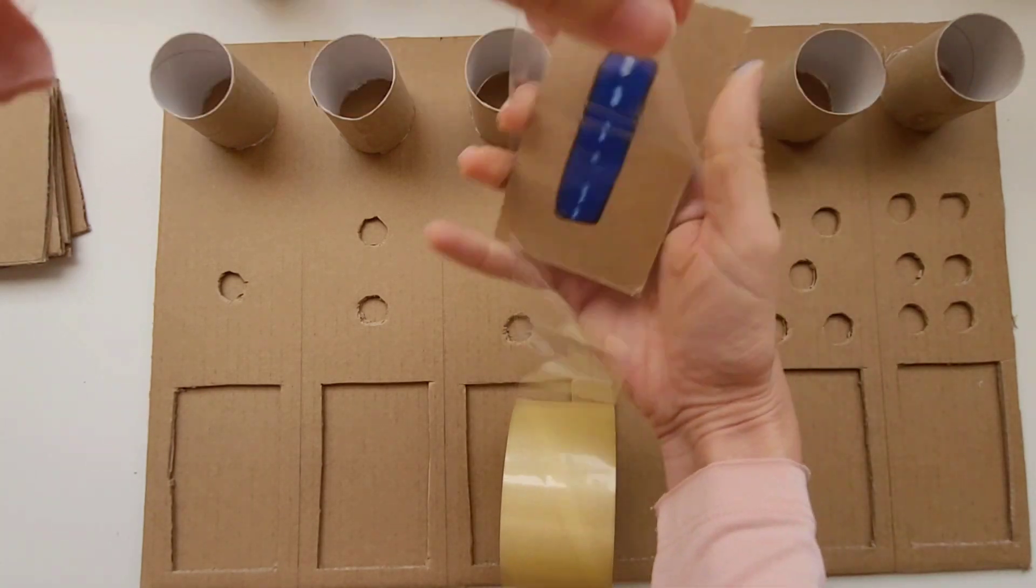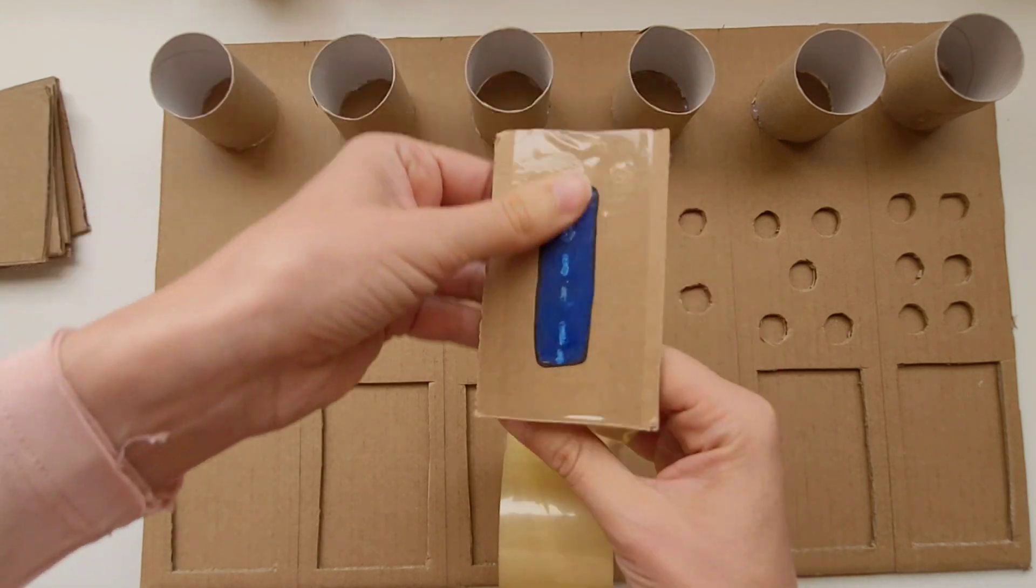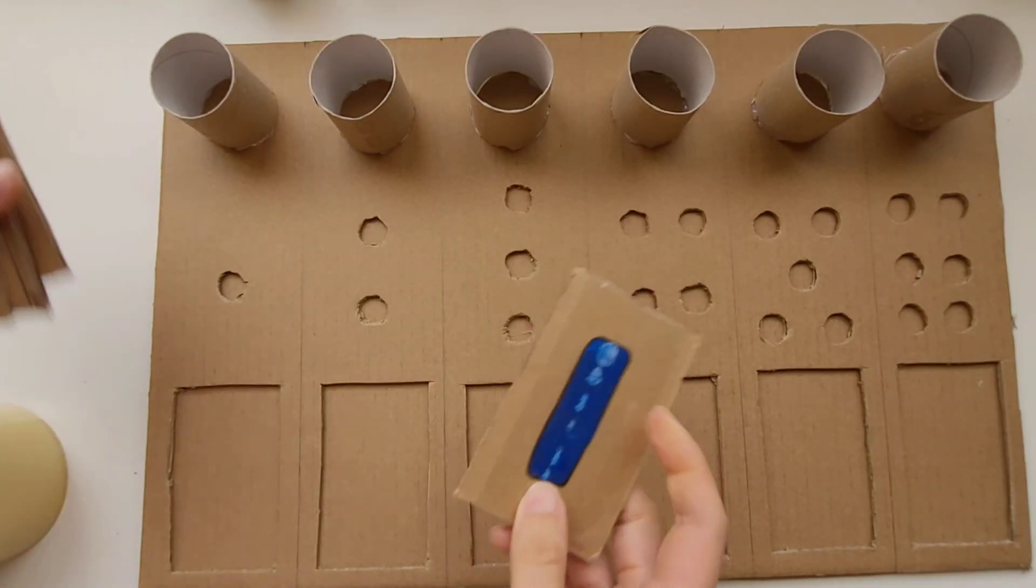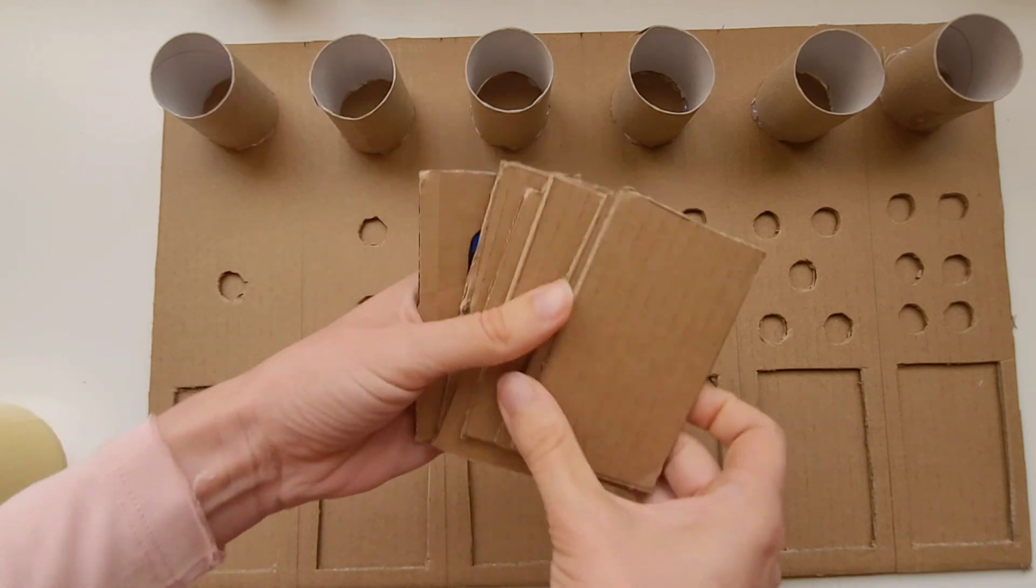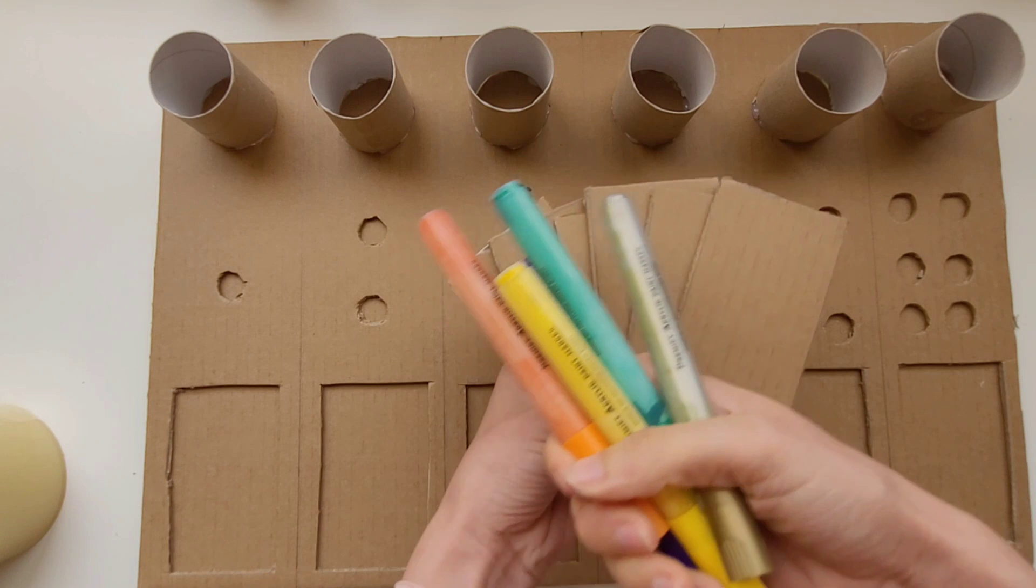Now I'm going to use some clear tape to cover up the rectangle with the number on it. That way your little one can use a dry erase marker to trace the number, and you can erase it and use it over and over again. Then you can repeat the process with the rest of the rectangles.